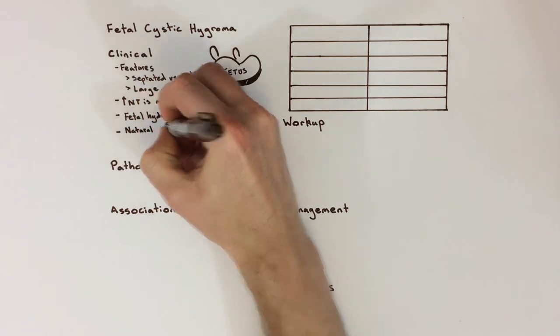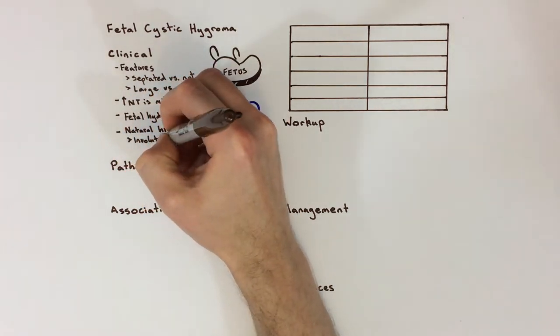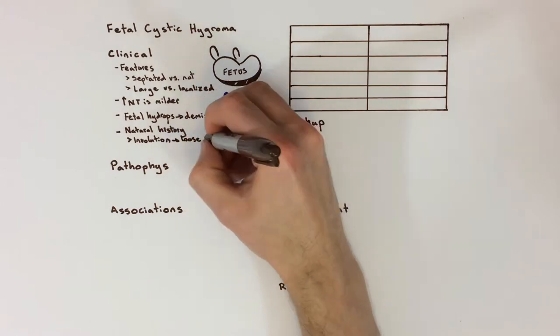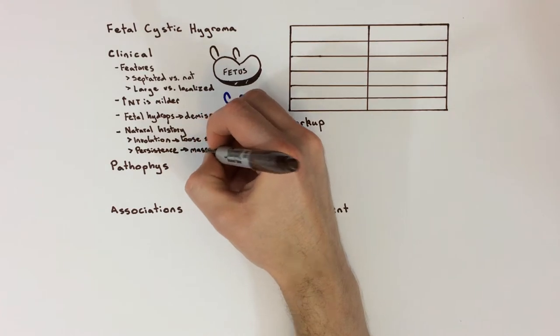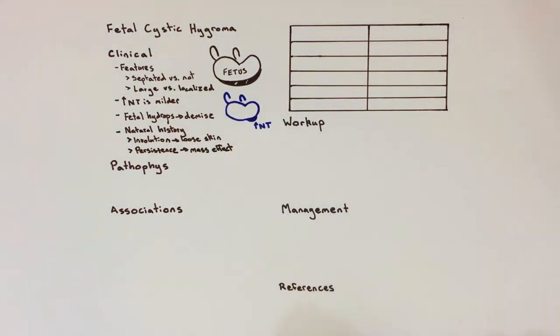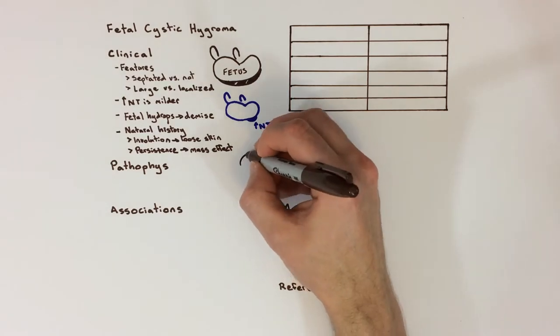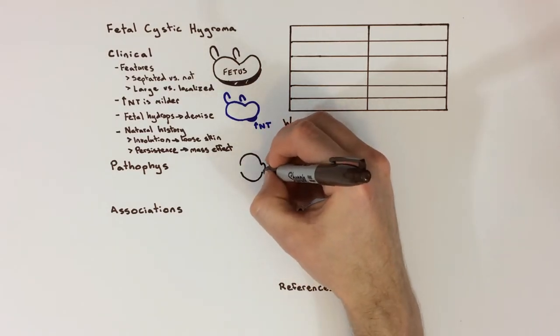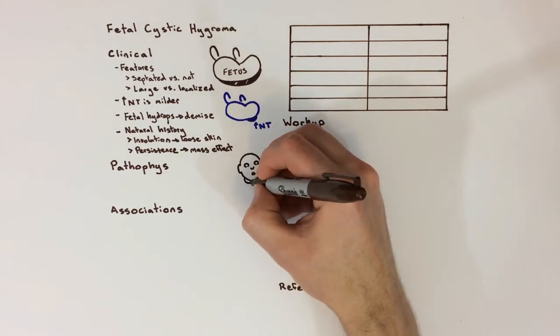Interestingly, the swelling of a first trimester cystic hygroma usually disappears during gestation, although it can leave redundant or loose skin, or even a webbed neck, where the swelling was. If it doesn't disappear, swelling can lead to cosmetic defects or problems eating, speaking, or breathing if it has a mass effect within the neck. Mass effect prenatally can cause polyhydramnios by impairing fetal swallowing.